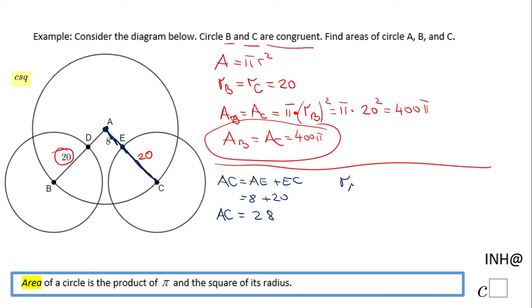So we can find out the area of circle A just by plugging this 28 into the formula of the radius of circle A. I have π times 28 squared.